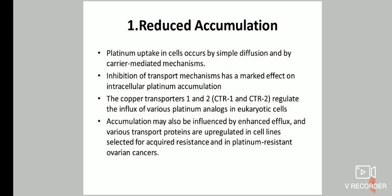Regarding reduced accumulation: platinum uptake in cells occurs by simple diffusion and by carrier-mediated mechanisms. Inhibition of transport mechanisms has a marked effect on intracellular platinum accumulation. The copper transporters CTR1 and CTR2 regulate influx of various platinum analogues in eukaryotic cells. Accumulation may also be influenced by enhanced efflux, and various transport proteins are upregulated in cell lines selected for acquired resistance and in platinum-resistant ovarian cancers.